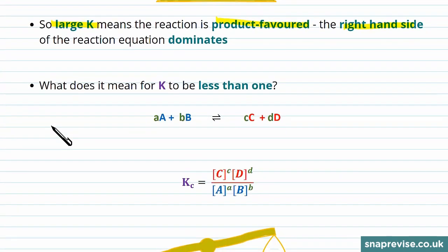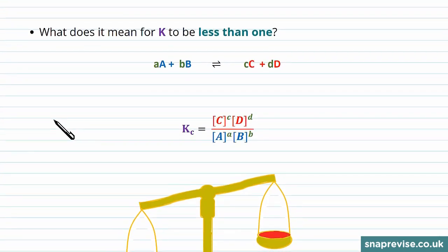Let's think about the other case where the equilibrium constant K is going to be less than 1. If the bottom of the expression for Kc is larger, so we have the bottom or denominator dominating...